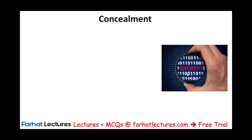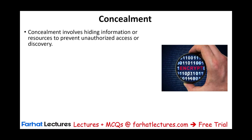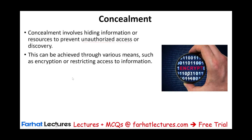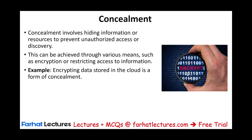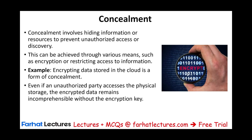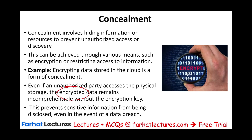Concealment is a little different — here you are hiding information or resources to prevent unauthorized access or discovery. This is achieved through means such as encryption or restricting access to information. An example is encrypting data stored in the cloud. Even if an unauthorized party gains access to the physical storage, the encrypted data prevents them from taking advantage of that access because the data is encrypted and cannot be read. This applies to sensitive information — even if someone has access, you encrypt the data so it appears as unreadable numbers.